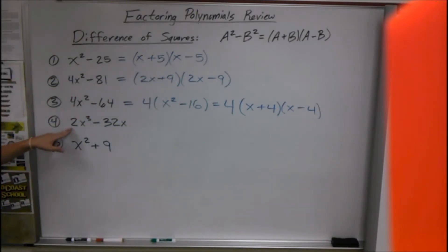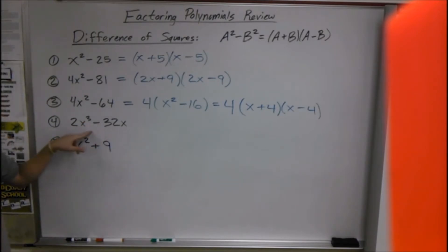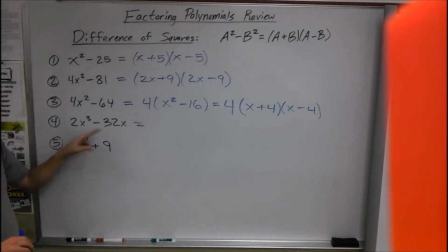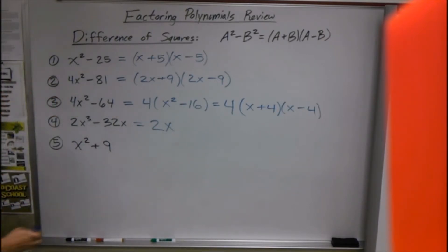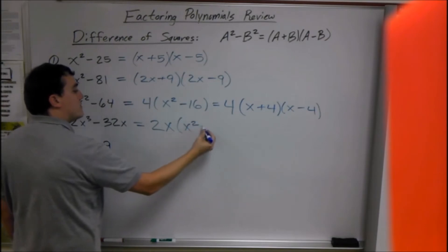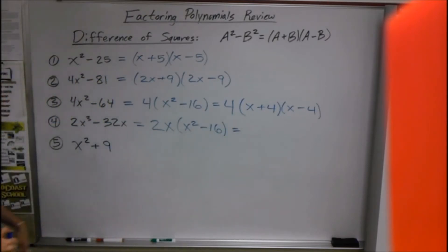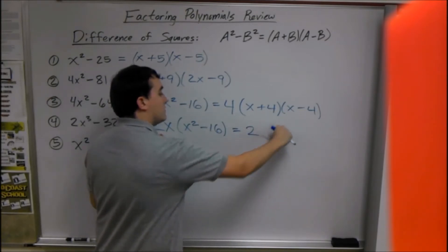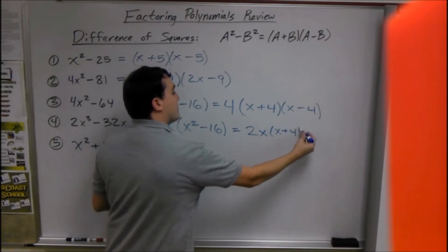We're going to do the same thing here. We can take out a greatest common factor — notice it's x cubed. You can't use the difference of squares if it's x cubed unless you can take something out first. We have 2x³ minus 32x; they both have a 2 and an x in common, so we take out 2x, which leaves us with x² minus 16. The square root of 16 is 4, so we get 2x(x + 4)(x - 4).